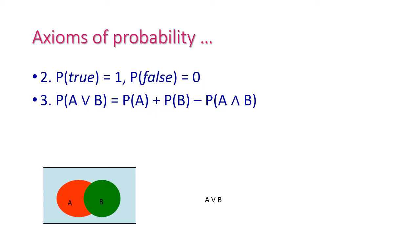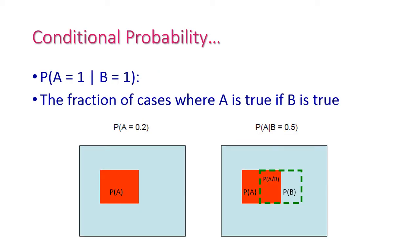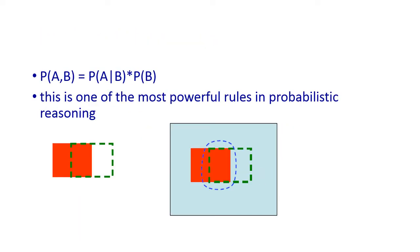Here the red colour oval is A and the green colour oval is B, showing P(A), P(B), and P(A ∪ B). Another example: P(A=1 | B=1) is the fraction of cases where A is true given B is true — that is, the probability of A being true if B is true. For example, P(A) = 0.2 (20% chance) and P(A | B) = 0.5 (50% chance). The product rule P(A, B) = P(A | B) × P(B) is one of the most powerful rules in probabilistic reasoning.